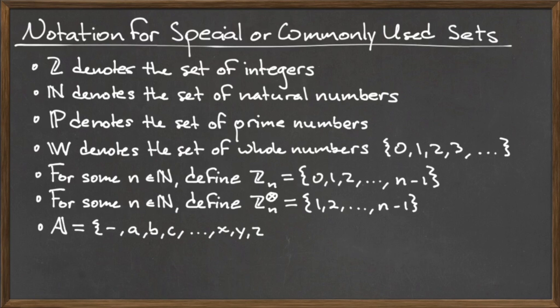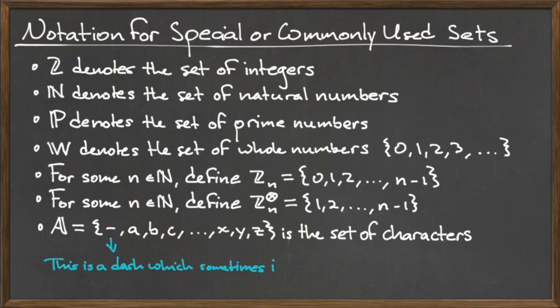Finally, we use a capital blackboard A to represent the set of characters, which contains all of the letters of the alphabet along with the dash. This dash is used to represent a space and will be discussed in detail in a later video.